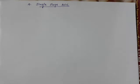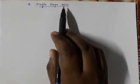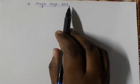Hi all, this class we are going to see the fourth type of ADC, that is the Single Slope ADC. In the last classes we have seen Flash type ADC, Successive Approximation ADC, and Counter type ADC. Now we are going to see Single Slope ADC. ADC means it's an Analog to Digital Converter.